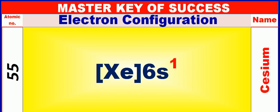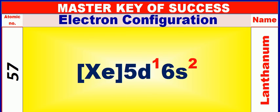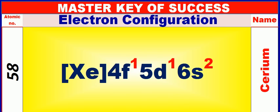Atomic number is 55 and name of atom is Cesium. Atomic number is 56 and name of atom is Barium. Atomic number is 57 and name of atom is Lanthanum. Atomic number is 58 and name of atom is Sirium.